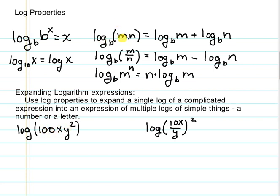So we can use our property up here where we have something multiplied inside a log into the sum of separate logs. So this will become log of 100 plus log of x plus the log of y squared.